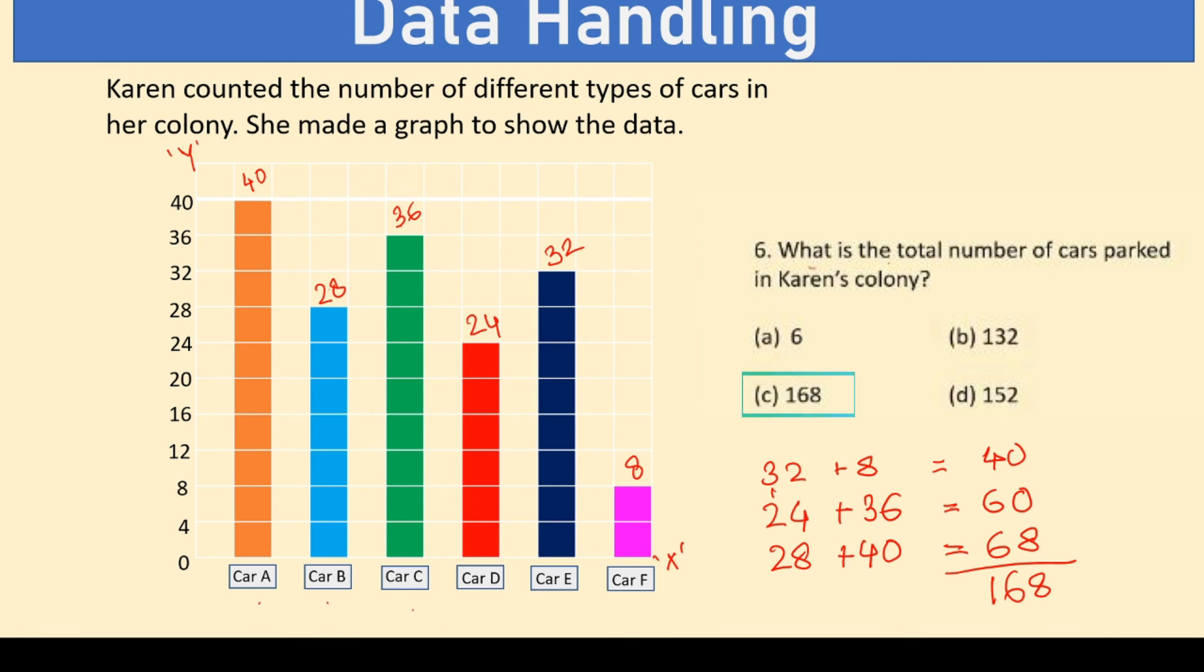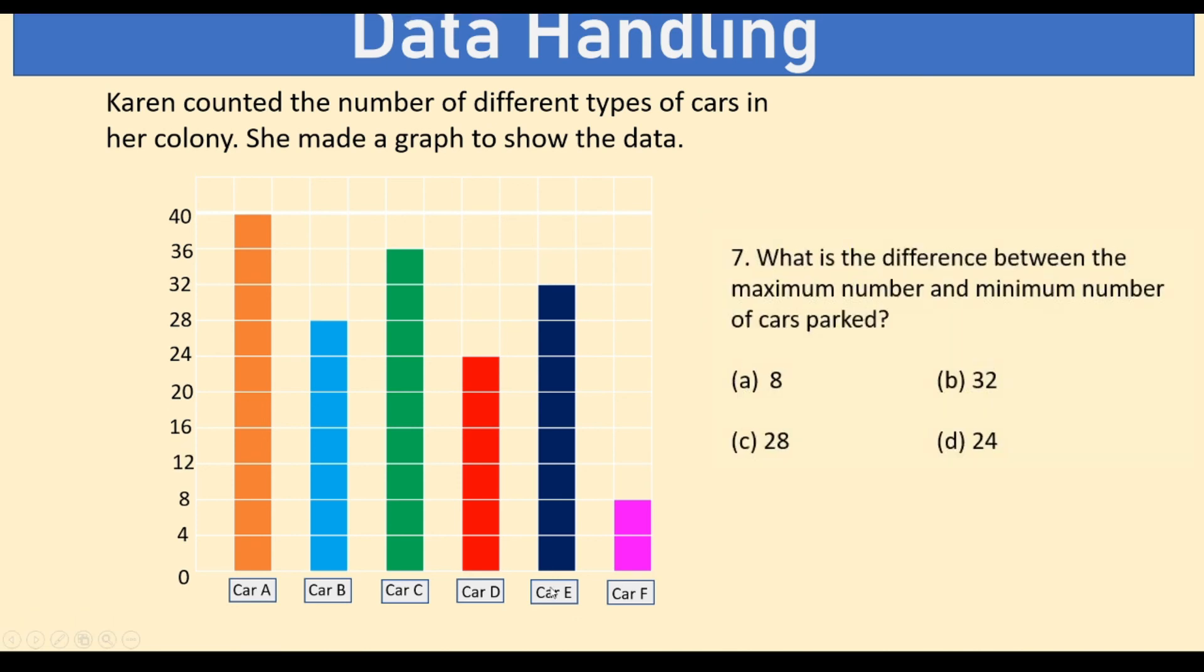The next question with the same graph asks us to find what is the difference between the maximum number and minimum number of cars parked. Now, maximum is the highest bar, which is car A, which is 40. And minimum is the lowest car, which is car F, which is 8. So, what we need to find is 40 minus 8, which is equal to 32. Hence, our answer is option B, 32.